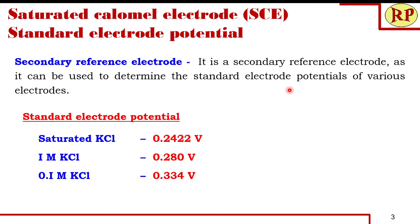This electrode acts as a secondary reference electrode and is used to determine the standard electrode potentials of various other electrodes. It is very commonly used in laboratories, unlike the standard hydrogen electrode, which has many limitations and is cumbersome to set up. Whenever a reference electrode is required in a lab, the saturated calomel electrode is normally used instead. To calibrate it, the standard hydrogen electrode — the primary reference electrode — may be used.